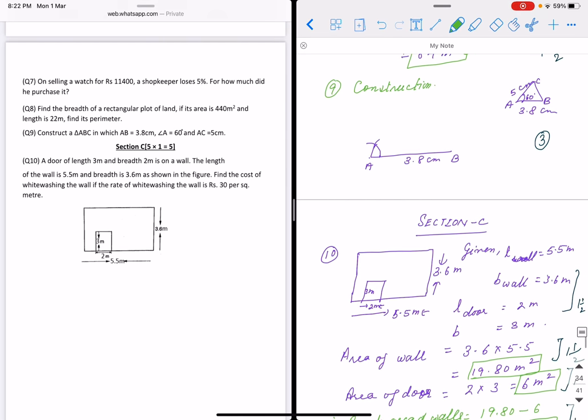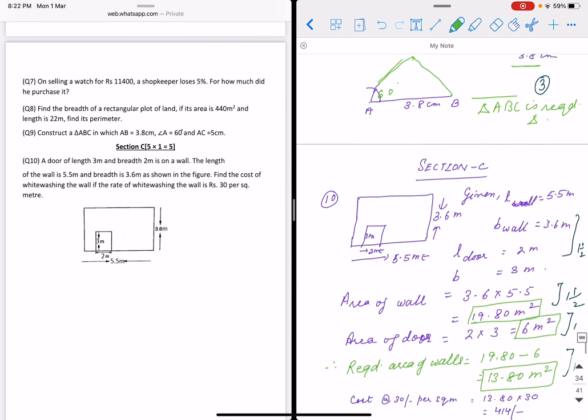Question number 9 is construction. First we draw a rough figure to know which one you will take as base, which angle is 60 degree. You use your sharp pencil, scale, line must be straight, 60 degree will be correct. And then you join and write triangle ABC is required triangle. This way you must give construction completely.